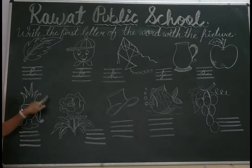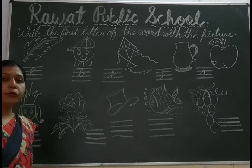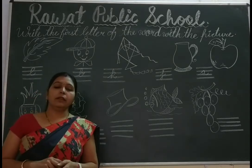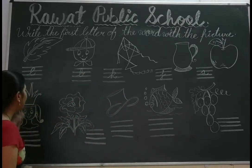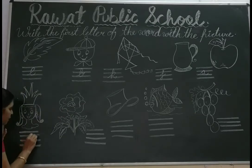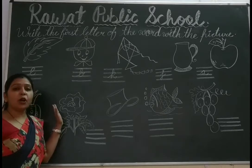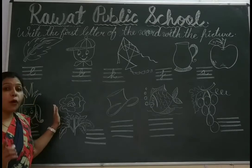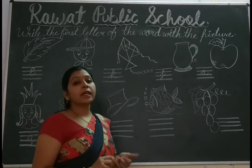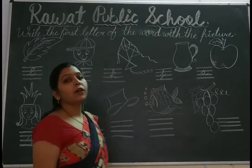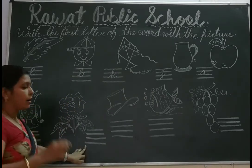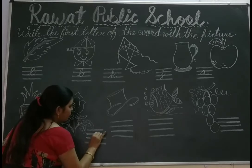Next, this is a picture of Queen. The spelling of Queen is Q-U-double E-N. Queen. The first letter of Queen is Q. So write it here: Q. Next, it is a picture of Rose. The spelling of Rose is R-O-S-E. So the first letter of Rose is R. Write it here: R.